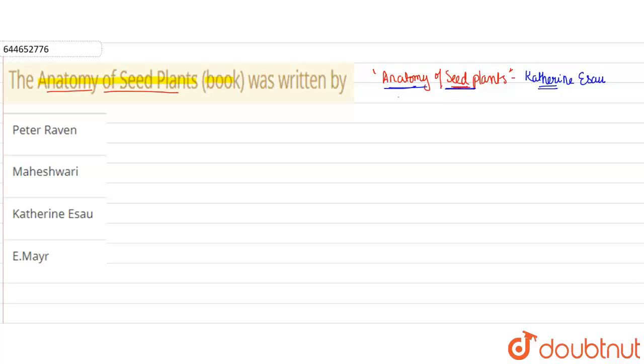Our first option says Peter Raven. Peter Raven has written multiple books. For example, Biology - he has written many multiple volumes of the book Biology. Also he has an extended version of the book Biology, that is 'Biology of Plants'. There are more books, but this is one of the books I'm telling you.